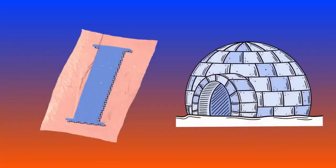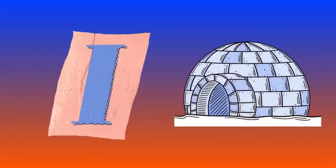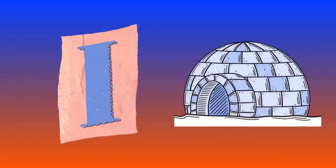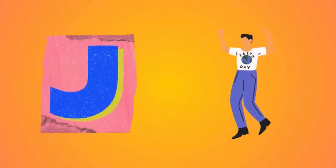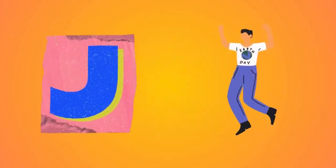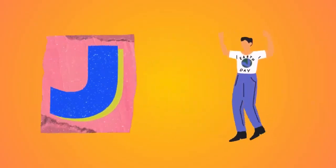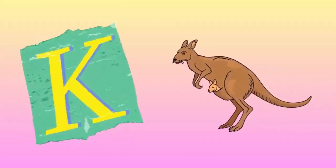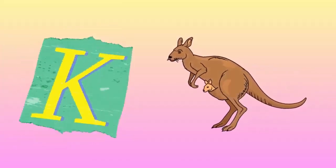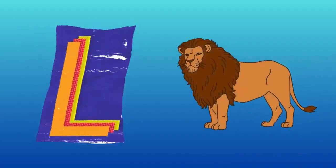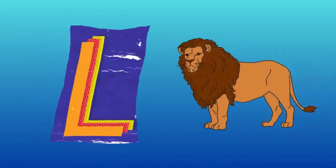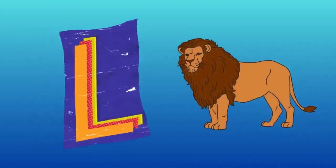I is for igloo, i-i-igloo. J is for jump, j-j-jump. K is for kangaroo, k-k-kangaroo. L is for lion, l-l-lion.